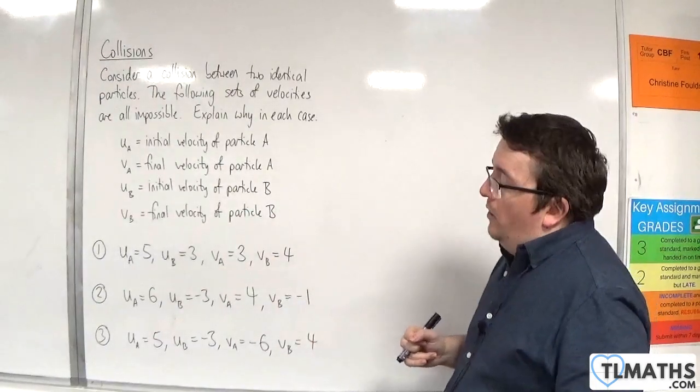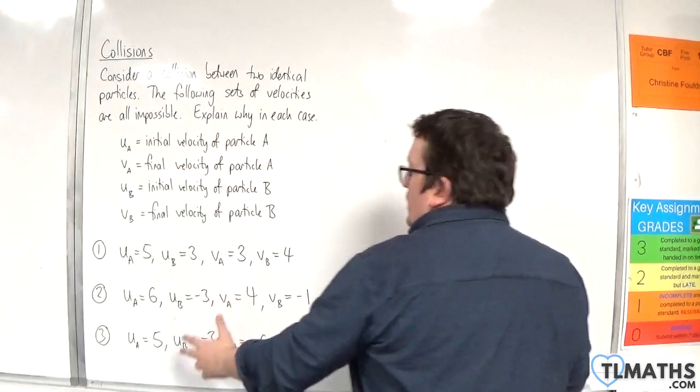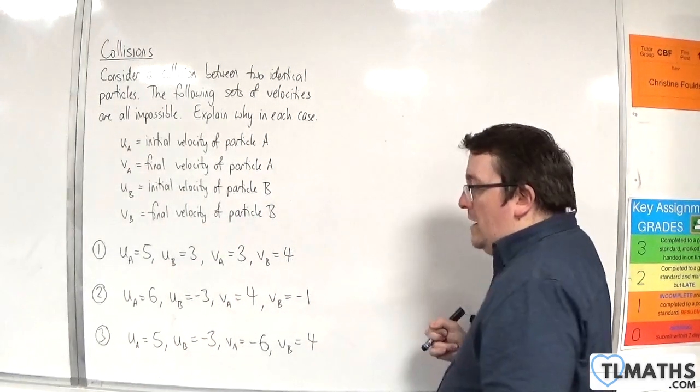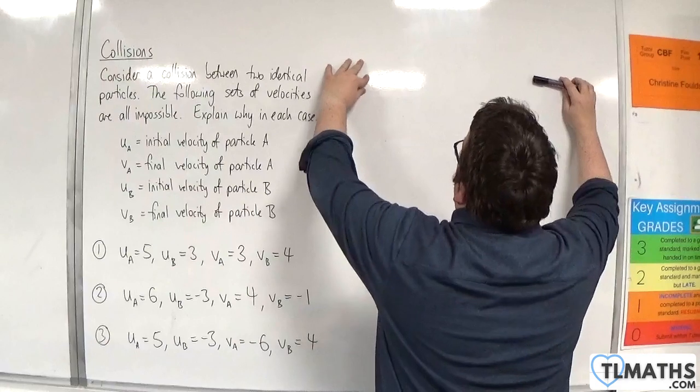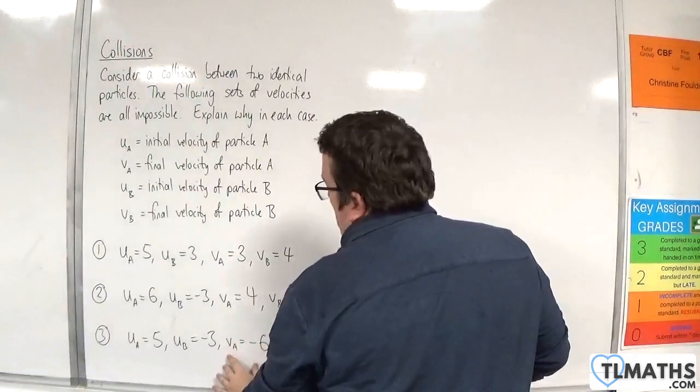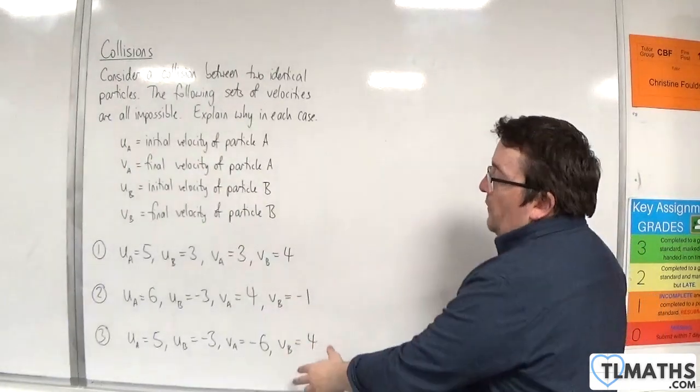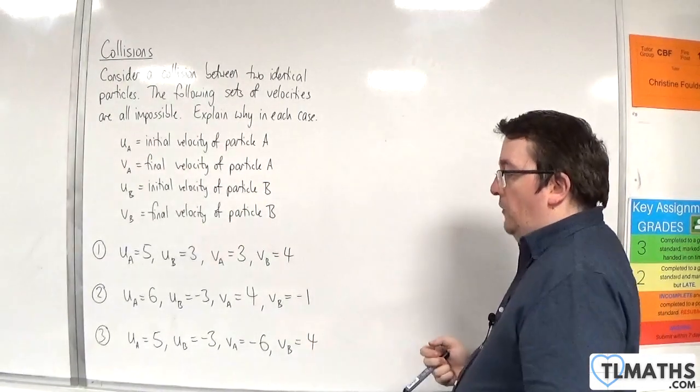Number three: the initial velocity of A is 5 meters per second, and the initial velocity of B is minus 3 meters per second. Again, A and B are coming in to collide with one another. However, the final velocity of A is minus 6 meters per second, and the final velocity of B is 4 meters per second.